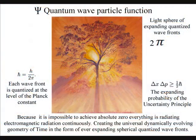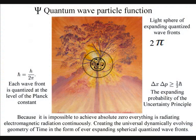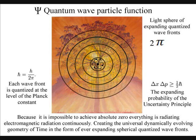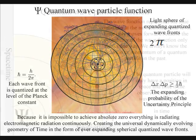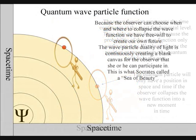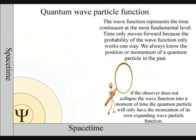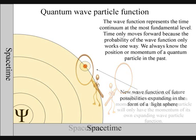We have an uncertainty principle because a quantum particle will only have a position in space and time if the wave function collapses. If the observer does not collapse the wave particle function into a photon of energy, the quantum particle will only have the momentum of its own wave function.